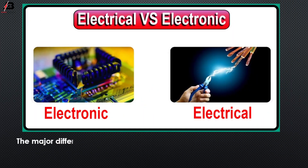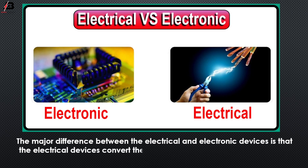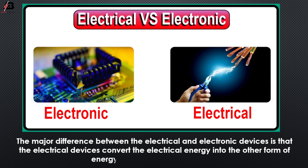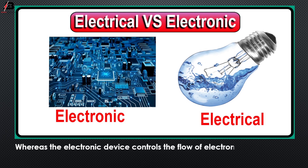The major difference between the electrical and electronic device is that the electrical device converts the electrical energy into other forms of energy like heat, light, sound, etc. Whereas the electronic device controls the flow of electrons for performing a particular task.